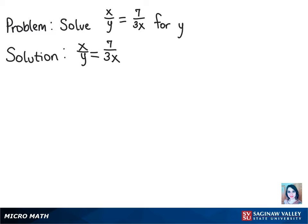Okay, to solve this problem, we can start by flipping both fractions so that instead we have y over x equals 3x over 7, because we want to make sure we're actually solving for y, not 1 over y.